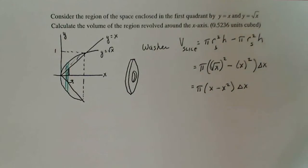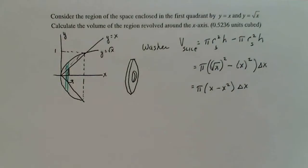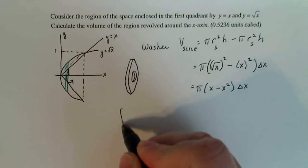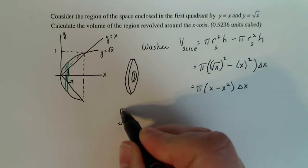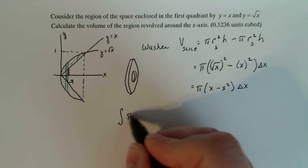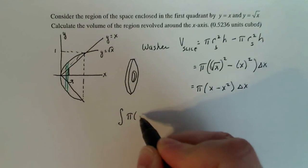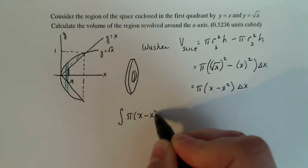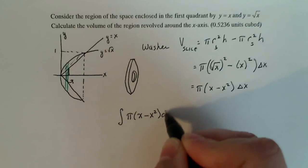That's the volume of just one slice. That's what you always want to focus on with these kinds of problems — just do one slice, one slice only. Then you're going to add them all up at the very last step. So I'm going to integrate pi times (x minus x squared) dx.